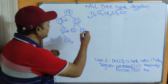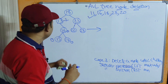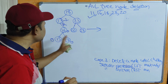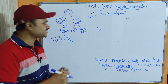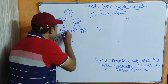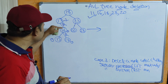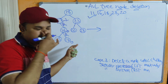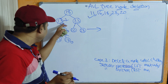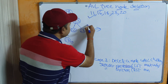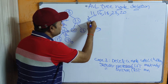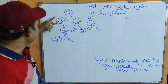Since node 16 has 2 children, we treat it as a single unit and perform RR rotation. RR rotation means we need to perform a left rotation on the corresponding unbalanced node, which is node 13. So 13 will be rotated to the left, and 16 becomes the parent.